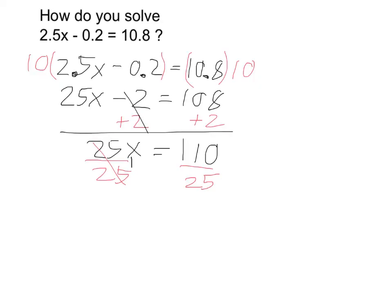So let's think. 25 goes into 110 four times. 4 times 25 makes 100, and then we have 10 left over out of 25. 4 and 10 twenty-fifths. 10 twenty-fifths can be simplified to two-fifths.